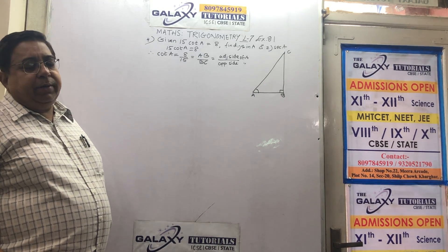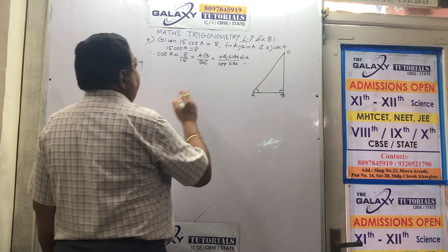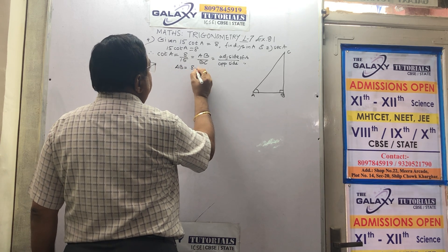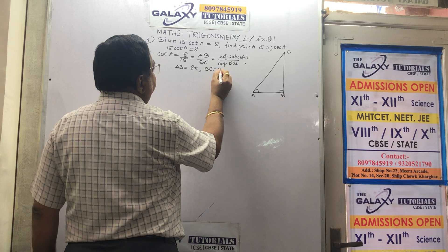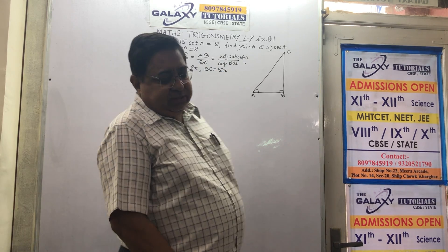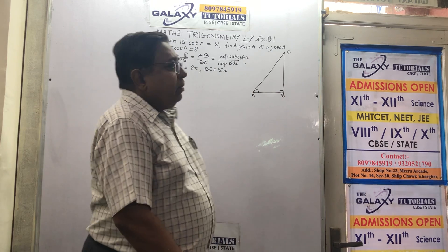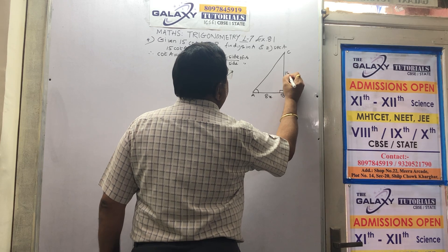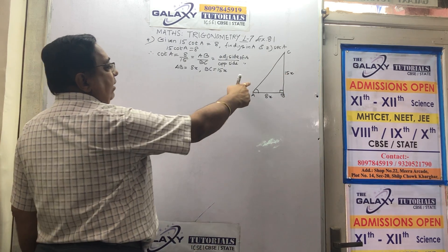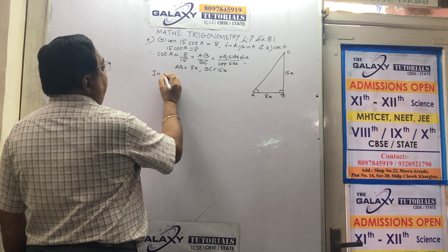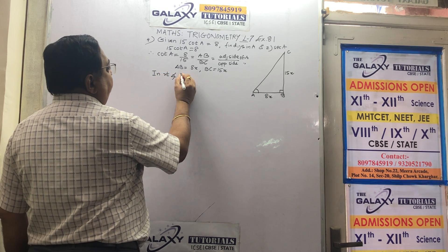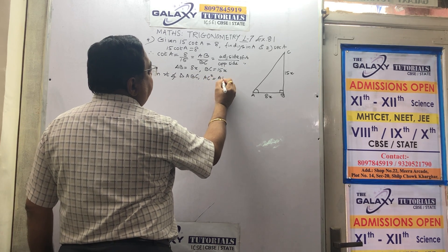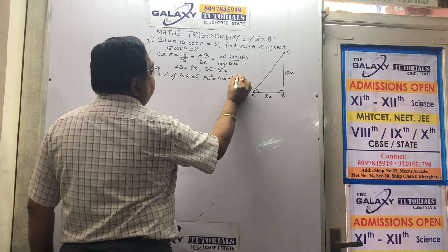As I told you, these are some common multiples of x. So AB is 8x and BC is 15x. These are some multiples; the ratio is 8 and 15. So I write 8x and 15x on the diagram. Now we will find the third side. In right angle triangle ABC, AC² equals AB² plus BC².